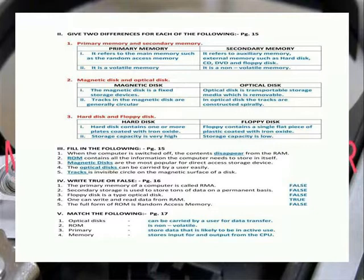Magnetic disk and optical disk. Magnetic disk: the magnetic disk is a fixed storage device. Tracks in the magnetic disk are generally circular. Optical disk: optical disk is a transportable storage media which is removable. In optical disk, the tracks are constructed spirally.